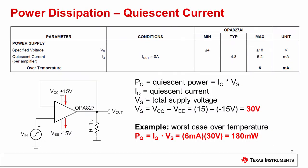Power dissipated inside an op amp will cause the device temperature, called the junction temperature, to increase. Junction temperature is the temperature of the internal die inside the device package, and elevated junction temperatures affect the performance of the device. If the junction temperature is elevated above the absolute maximum temperature, damage can occur. Amplifiers dissipate power from the quiescent current, or idle state current, often called IQ, and from the load current.